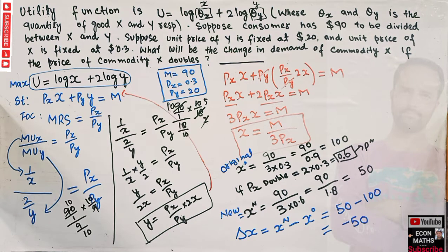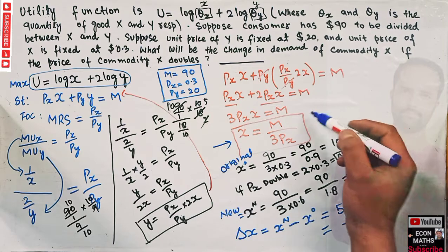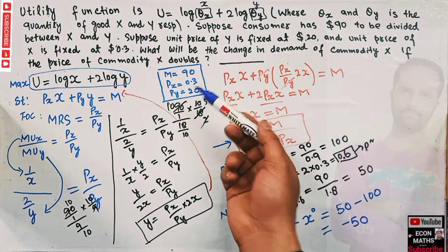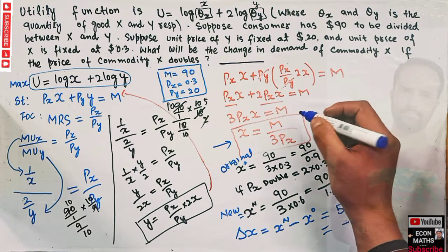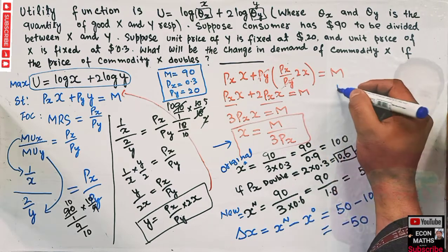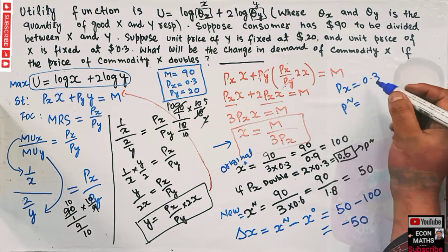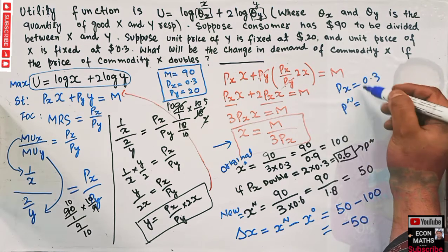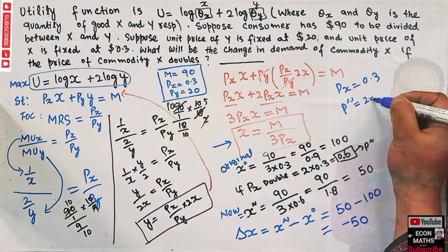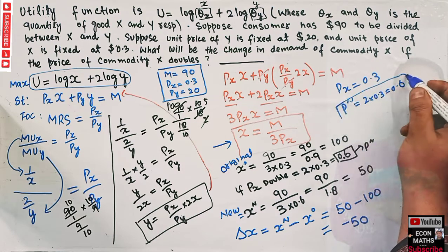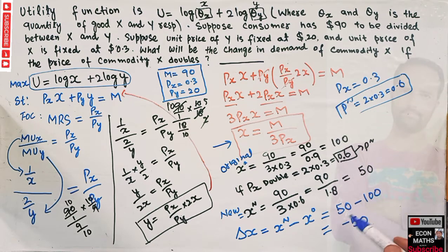To summarize: we first derived the demand function for good X, then plugged in the initial values with price 0.3 to get X = 100, and then the new price double of 0.3, which is 0.6, giving X = 50. The change in demand is −50. I hope this video was clear. Thank you.